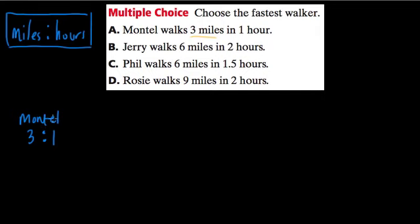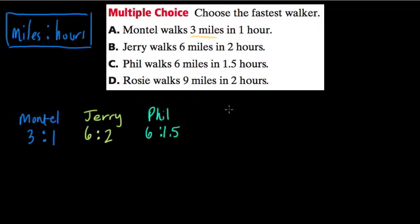Then we have Jerry who walks six miles in two hours, Phil who walks six miles in 1.5 hours, and Rosie who walks nine miles in two hours. What stands out right away is that Phil is walking faster than Jerry, so we can already cross out Jerry.